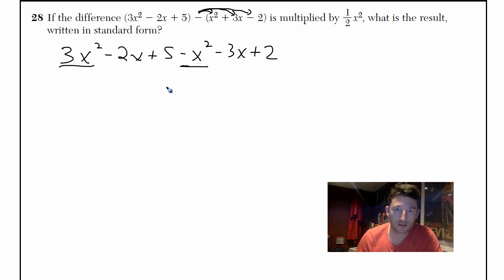So let's underline everything that goes together. That's gonna be 2x². That's a -2x and a -3x, -5x, and 5 + 2 is 7.